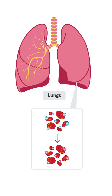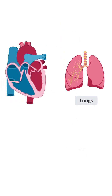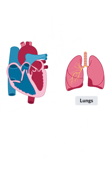In the lungs, the blood picks up oxygen and releases carbon dioxide. This oxygen-rich blood then returns to the heart via the pulmonary veins.